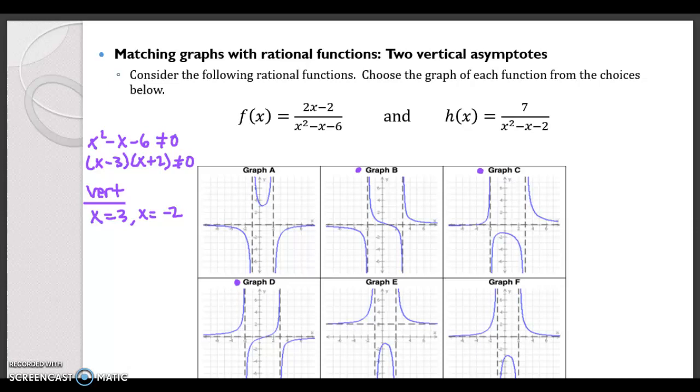Our horizontal asymptote, well, the degree of the top N is less than the degree of the bottom M because the degree of the top is 1 and the degree of the bottom is 2.